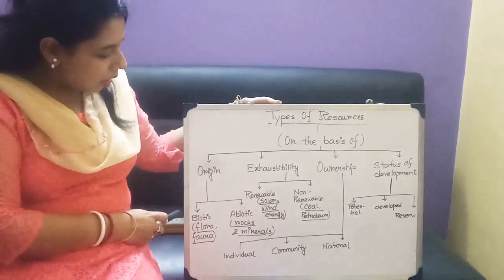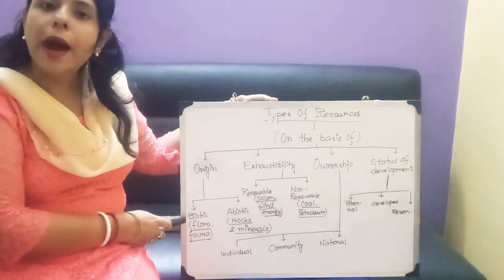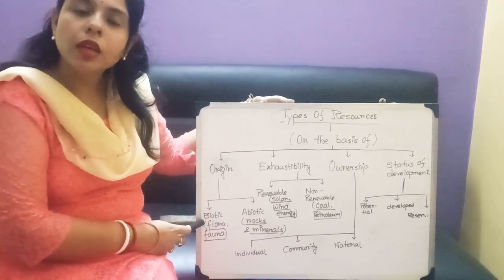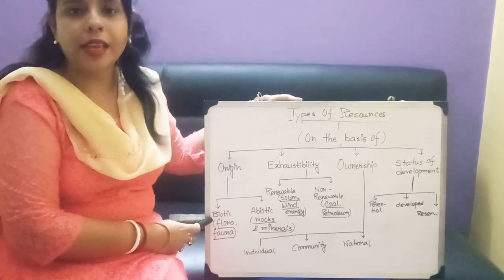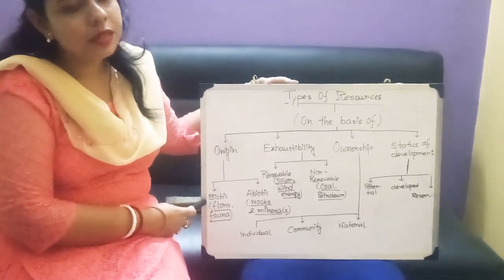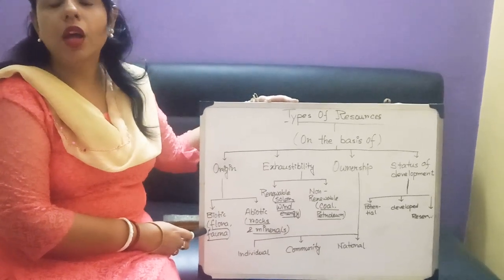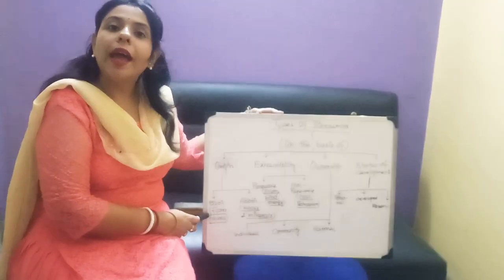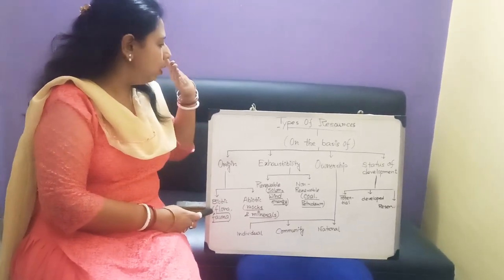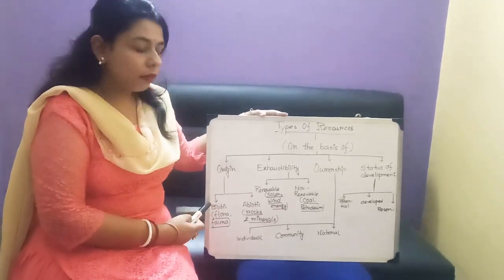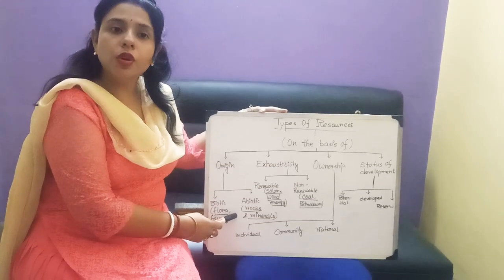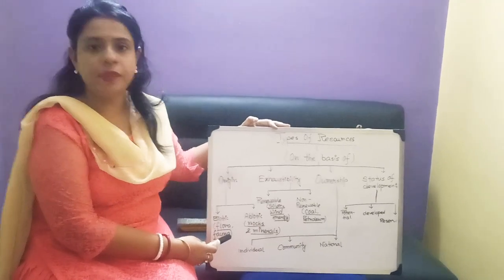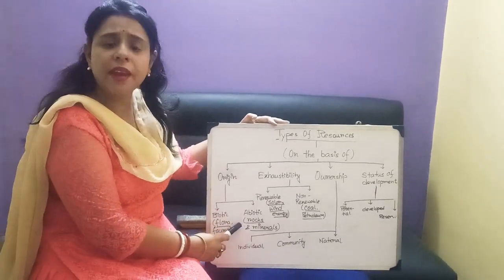According to this basis, classification is of two types: biotic and abiotic. Biotic means the resource produced from living things is known as biotic resource — for example, flora and fauna. Flora means plant species and fauna means animal community. Abiotic resource is the resource which has not come from living things but from non-living things, such as rocks and minerals.